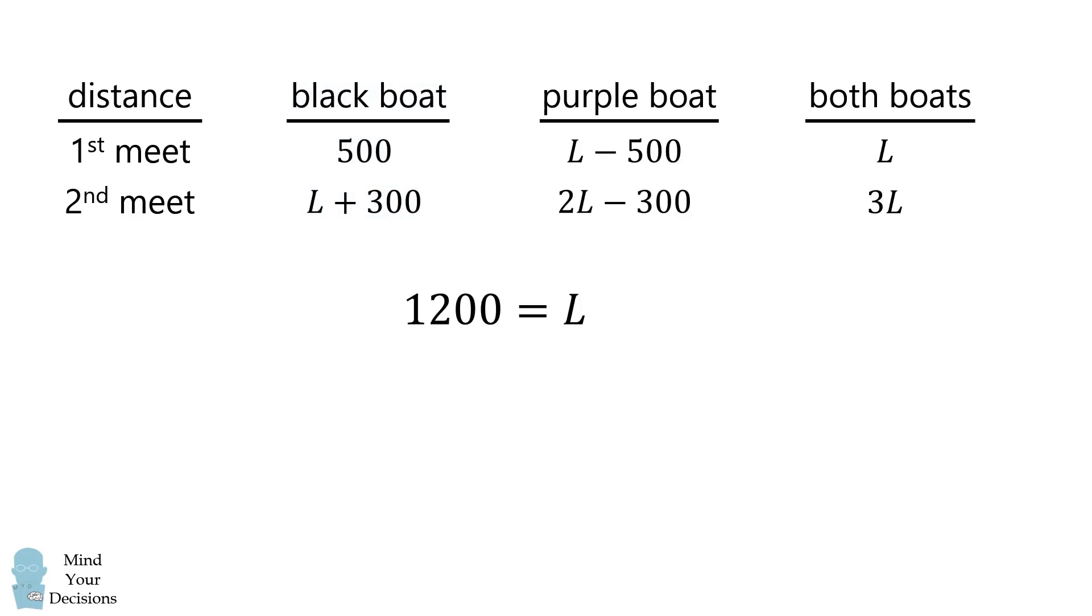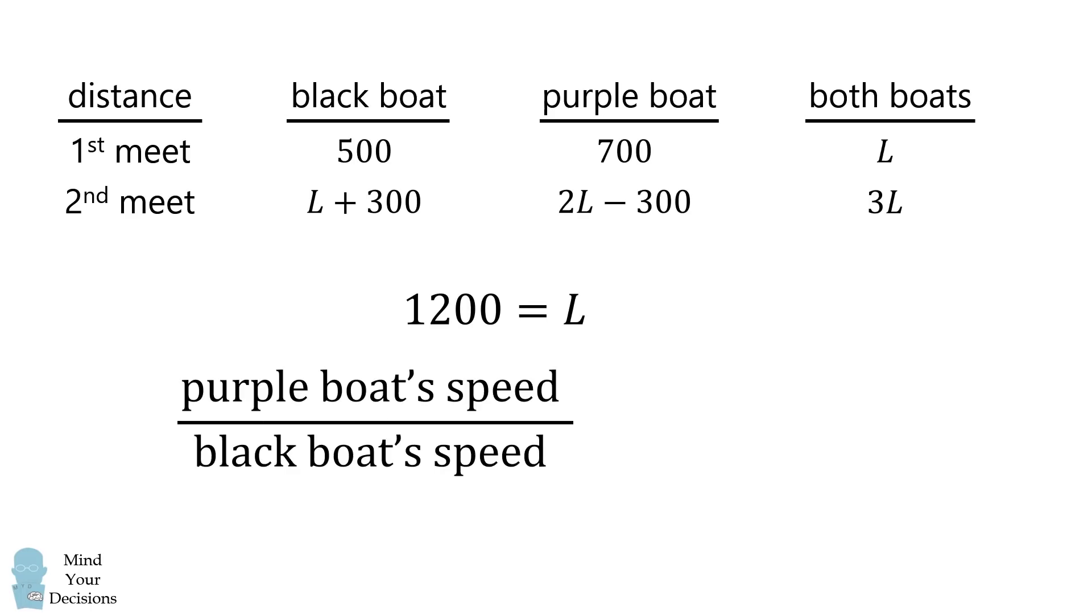To get the ratio of speeds, we substitute L into the first equation for the purple boat. We get L minus 500, which equals 700. We can then compare relative distances to get relative speeds. The purple boat speed divided by the black boat speed equals 700 divided by 500, which is 7 over 5, or 1.4. That's the answer.